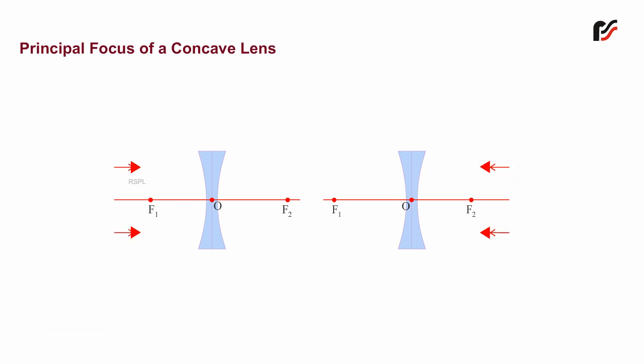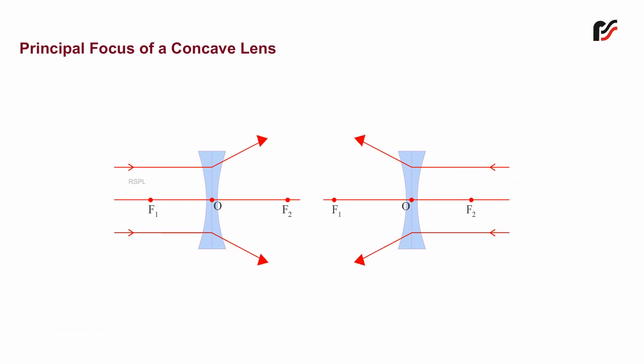When a parallel beam of light is incident on either of the spherical surfaces of a concave lens, after refraction through it, they appear to come from a fixed point on the principal axis. This point is called the principal focus of a concave lens. The same effect can also be obtained from the other surface. So the concave lens has two foci, F1 and F2, one on each side of the lens.